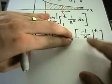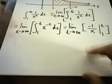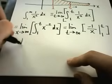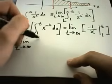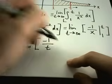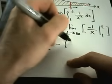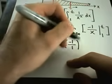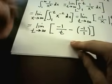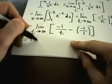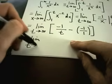I've got my limits from one to t, and again I'm still just treating this part like a definite integral, I'm kind of forgetting about the limit portion of it. So I'm going to plug in my limits of integration: I'll get negative 1 over t minus negative 1 over 1.